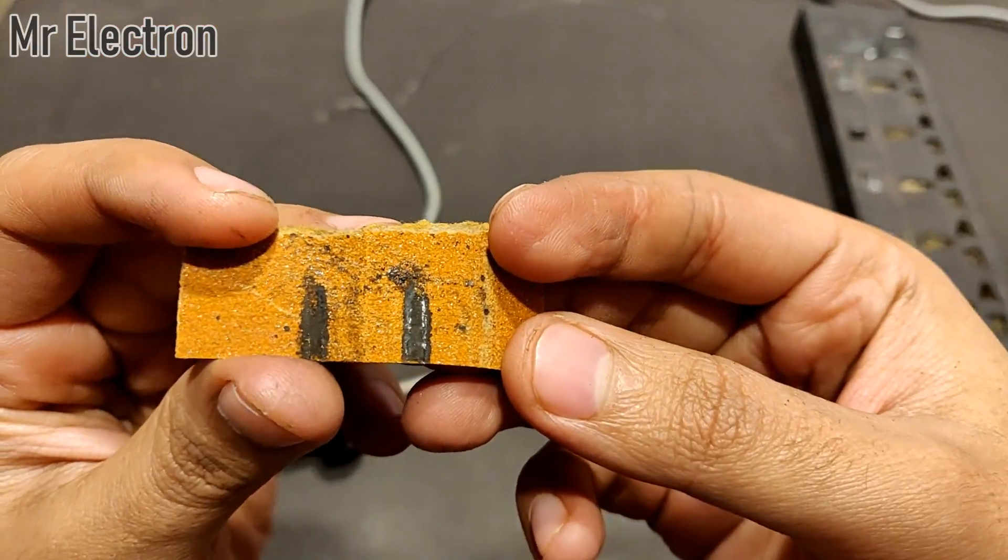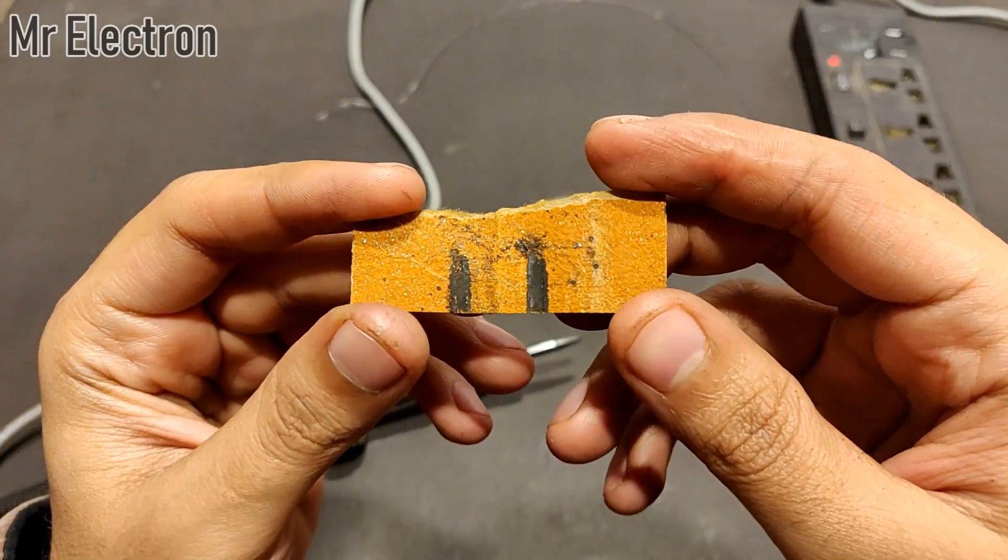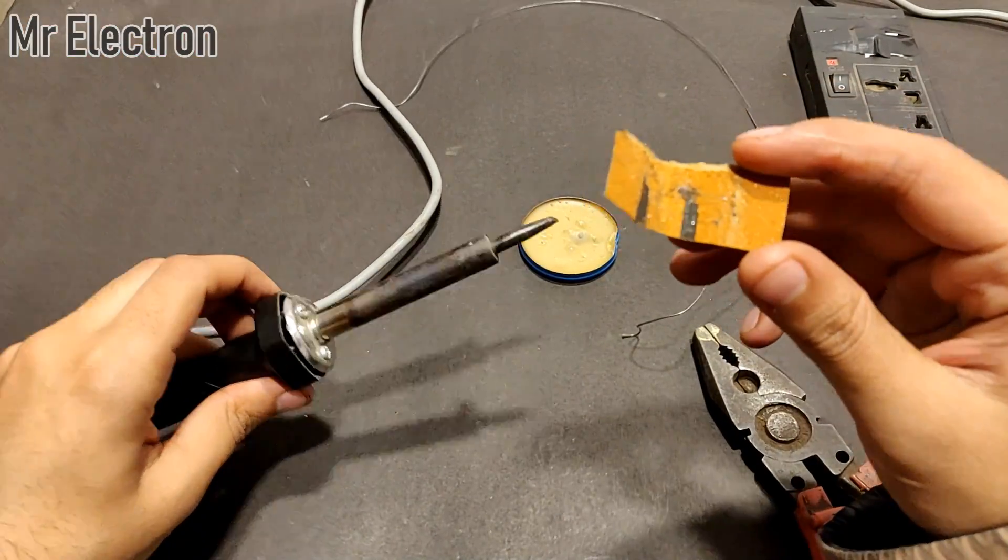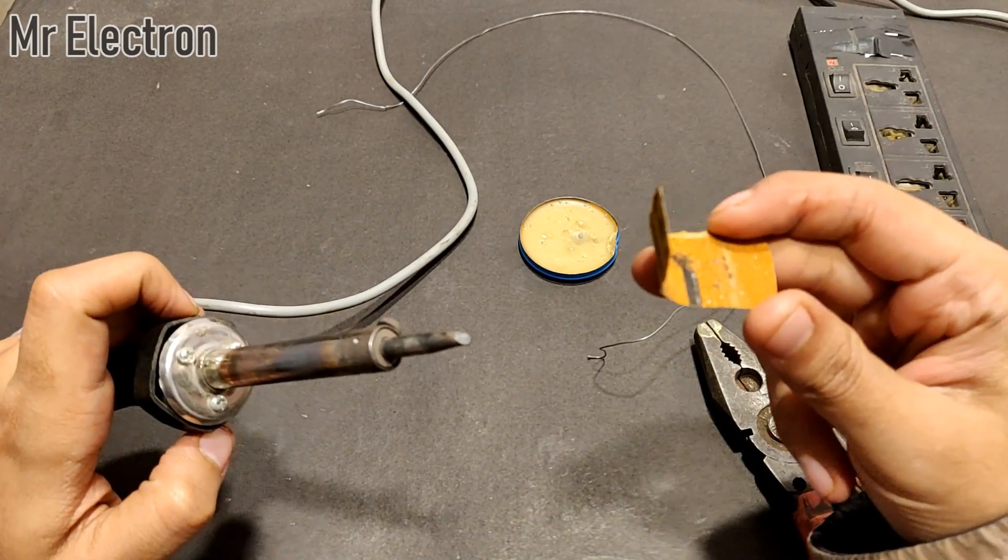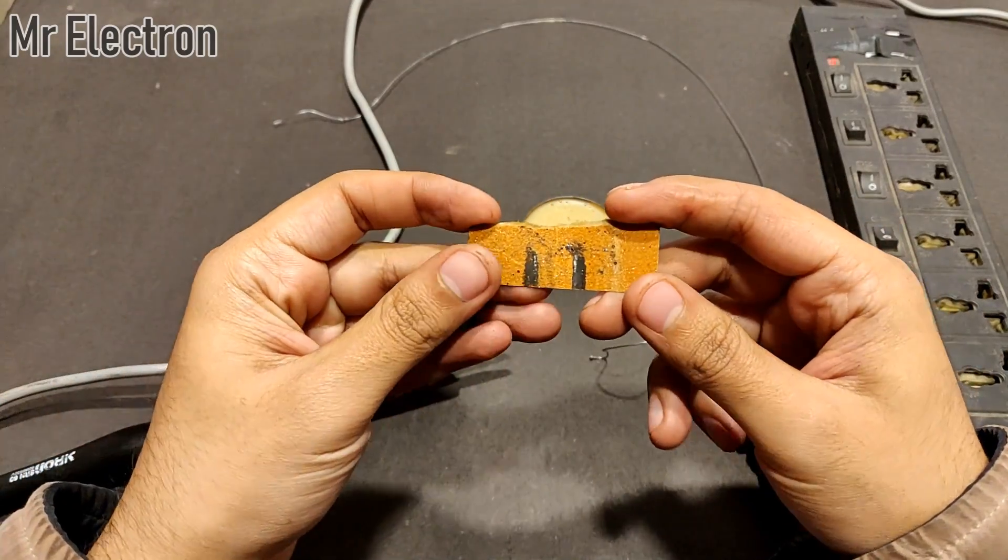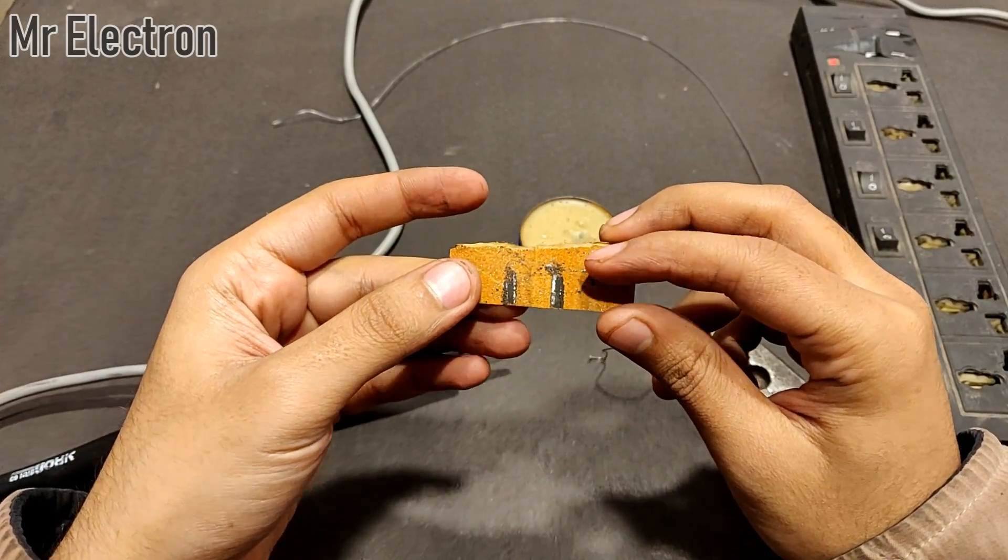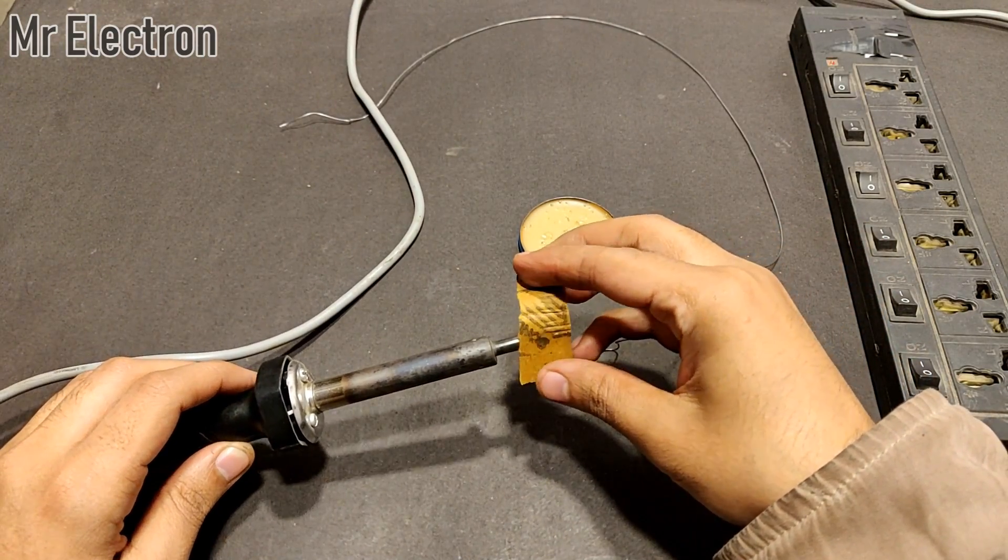You see, this is the reason why there is no longer any space left for the solder to stick to the tip. So we have to remove the coating of these black particles on the tip of the soldering iron. That is really important.